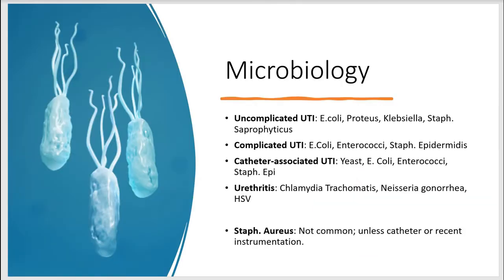We'll also talk about microbiology — what kind of bacteria causes UTI. In uncomplicated UTI, the majority are E. coli, and then come Proteus, Klebsiella, and Staph Saprophyticus. In complicated UTI, we have E. coli, Enterococci, and Staph Epidermidis.